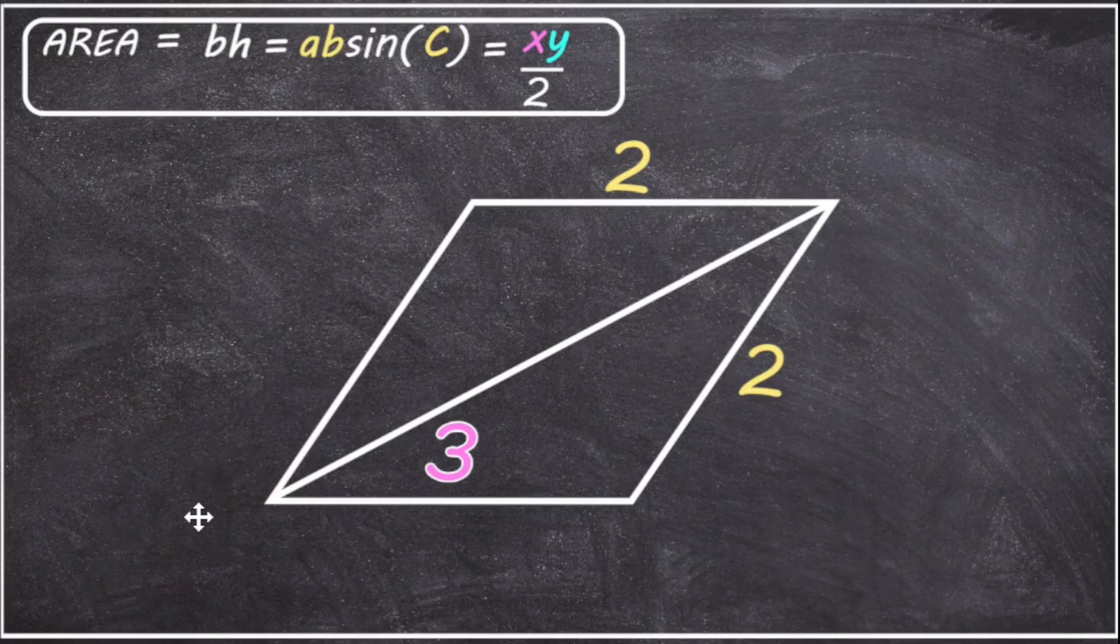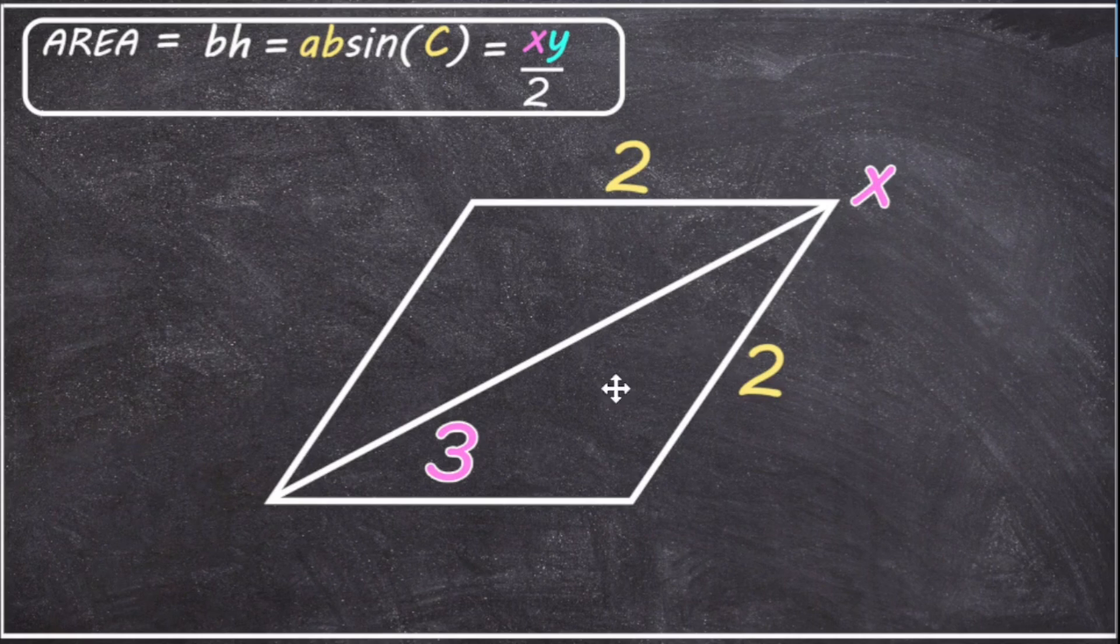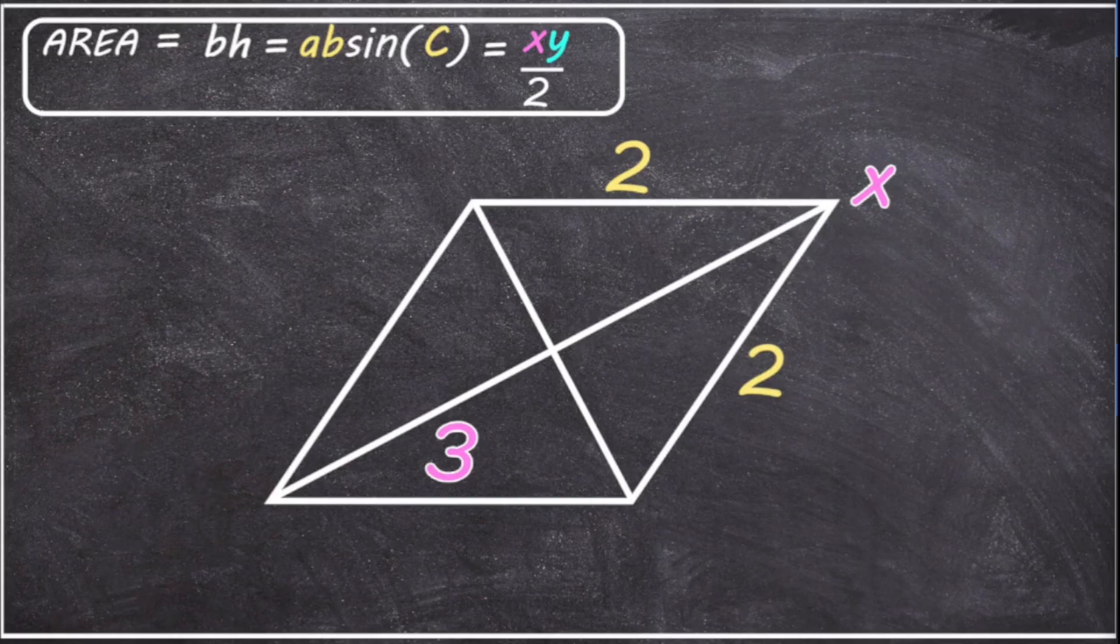I'm going to give the first diagonal the label of X, and the length of X must be 3. Now let's add in and label the second diagonal. We'll call that diagonal Y. We don't know the length of Y yet.